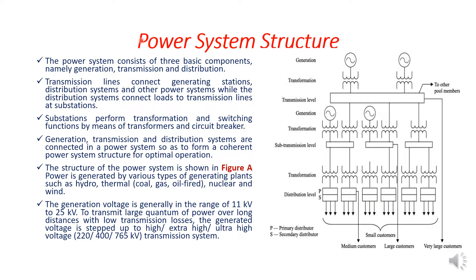I am going to explain the structure of the power system. The power system consists of three basic components, namely generation, transmission, and distribution. Transmission line connects the generating stations, distribution systems, and other power systems, while the distribution system connects loads to transmission line and substation. Substation performs transformation and switching function by means of transformer and circuit breaker. Generation, transmission, and distribution systems are connected in the power system so as to form a coherent power system structure for optimal operation. The structure of the power system is shown in figure A.